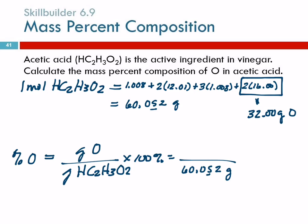We multiply by 100%. 32 divided by 60.052 times 100, with four significant figures this time, equals 53.29%. That's the percentage of oxygen in acetic acid.